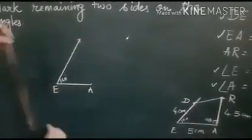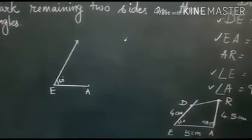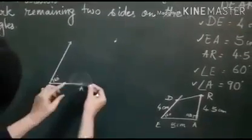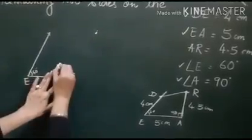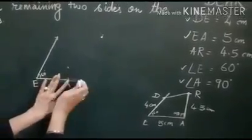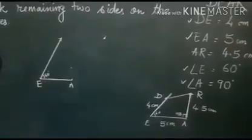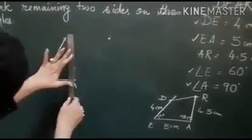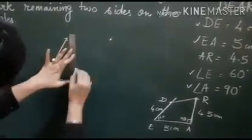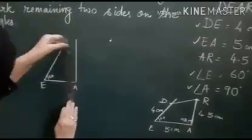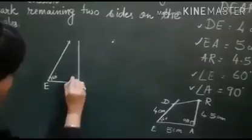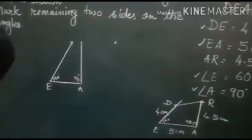Now at A you will draw an angle of measure 90 degree. See your rough sketch, and 90 degree is easy to draw. You can mark here 90 first with the help of your protractor and then you will join with your scale. This is your EA which is 90 degree.